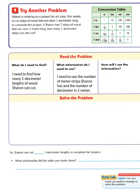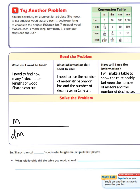So, how will I use this information? Well, I will make a table to show the relationship between the number of meters and the number of decimeters. So, we are going to solve the problem. So, you should have built a table where the top of it is going to be one meter and the bottom row would be one decimeter. So, let's do that. We are going to have meter and decimeter. And that's going to be our table.